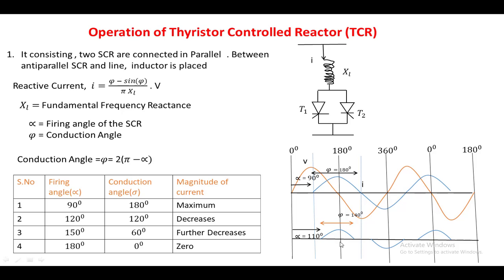However, the TCR injects harmonics into the system because the current waveform is not a pure sine wave — there are intervals where no current flows, creating distortion.